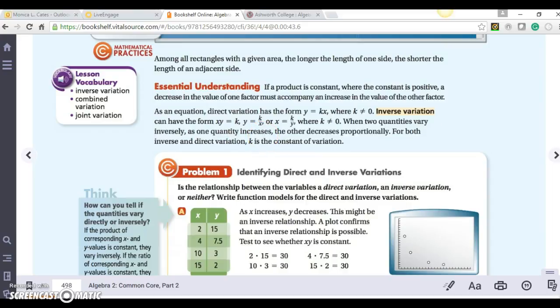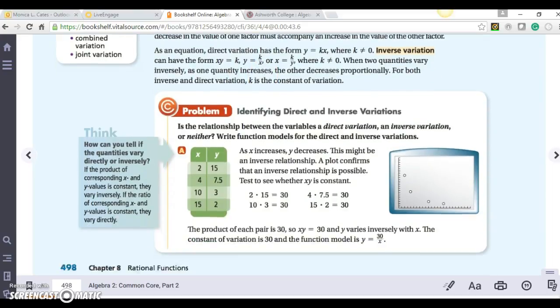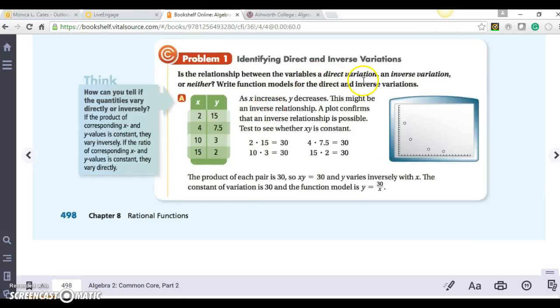Let's look at problem number one. Is the relationship between the variables a direct variation, an inverse variation, or neither? Write function models for the direct and inverse variations. We have x and y: 2 and 15, 4 and 7.5, 10 and 3, and 15 and 2.